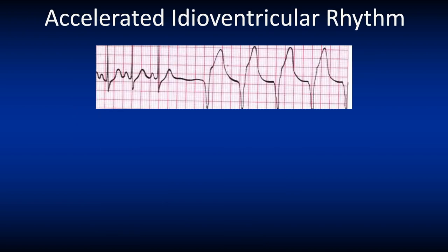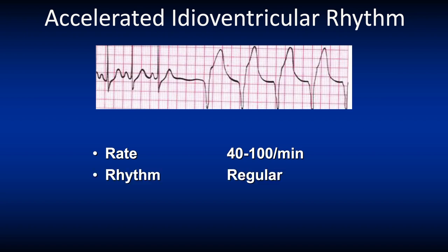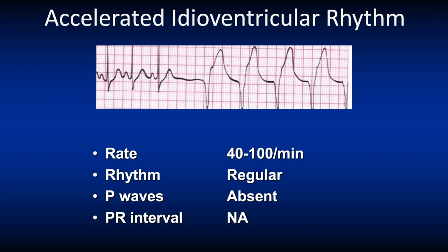The accelerated idioventricular rhythm looks exactly like an idioventricular rhythm, except for the rate which is 40 to 100 beats per minute. The rhythm is still regular, the P waves are absent as the rhythm originates inside the ventricles, we do not have a PR interval, and the QRS complex is wide.